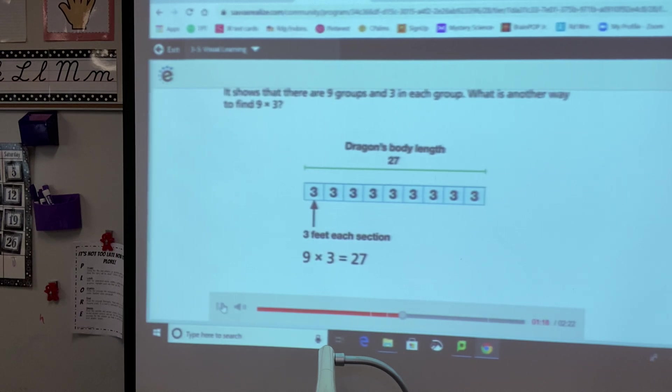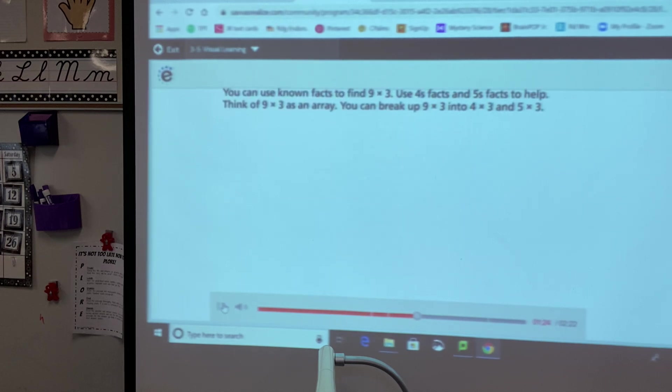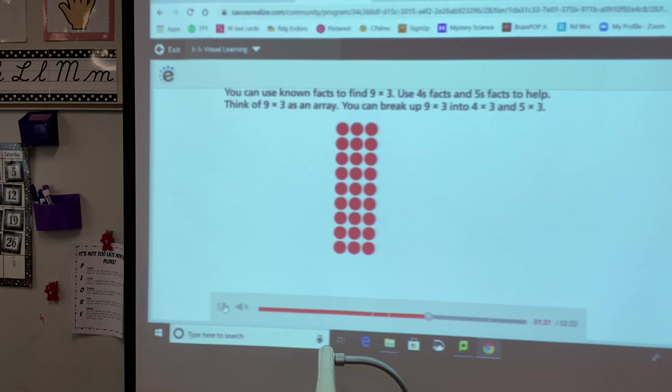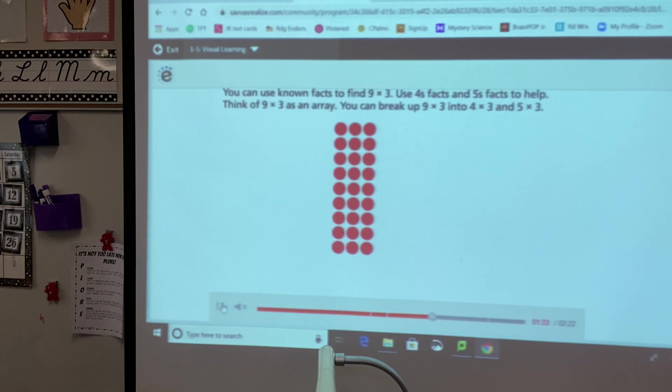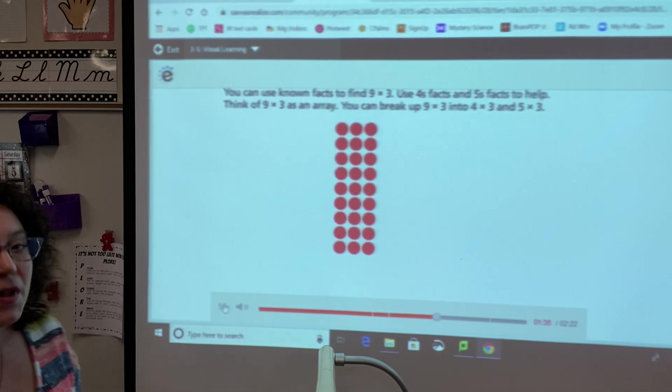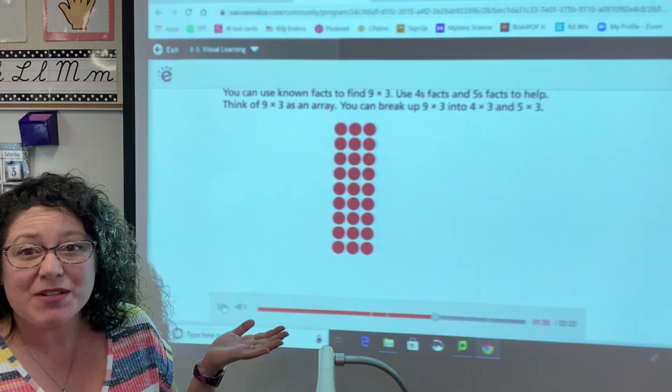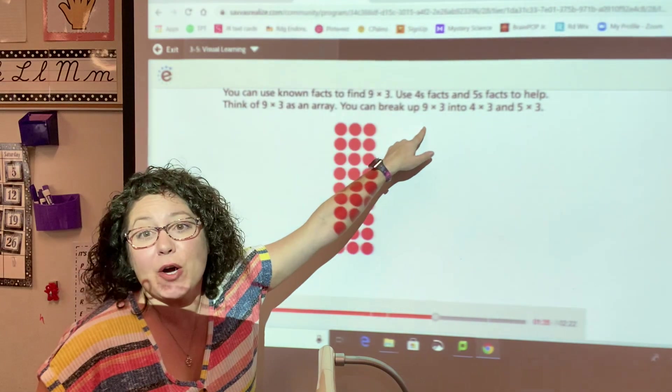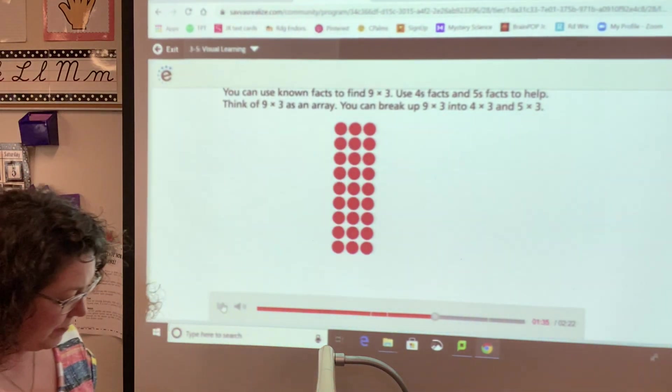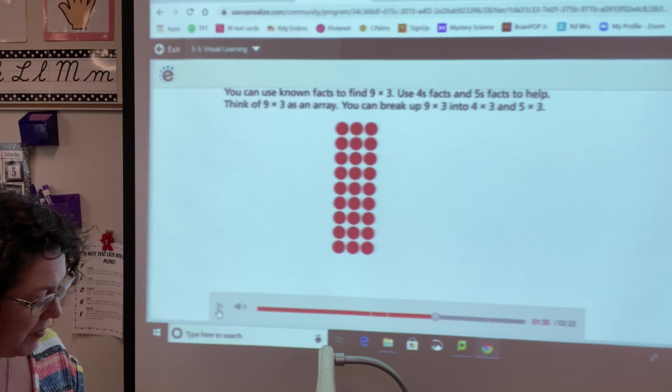What is another way to find nine times three? You can use known facts to find nine times three. Use fours facts and fives facts to help. Think of nine times three as an array. So when he said use fours facts and five facts, where did those numbers come from? They split apart the nine into four plus five. That distributive property.